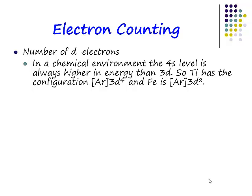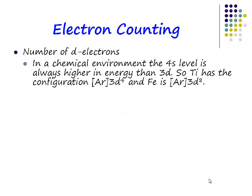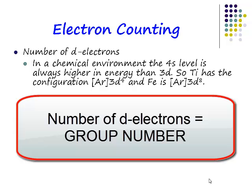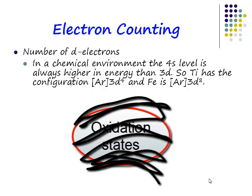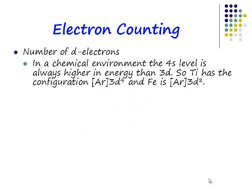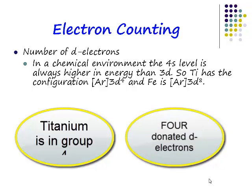First, we need to work out how many d-electrons we've got in our system. It's the group number. This is a really important point: we are not interested in oxidation states. Our methodology has nothing to do with oxidation states. If titanium is in group 4, it donates 4 electrons to our complex. Iron is in group 8, it donates 8 electrons to our complex.